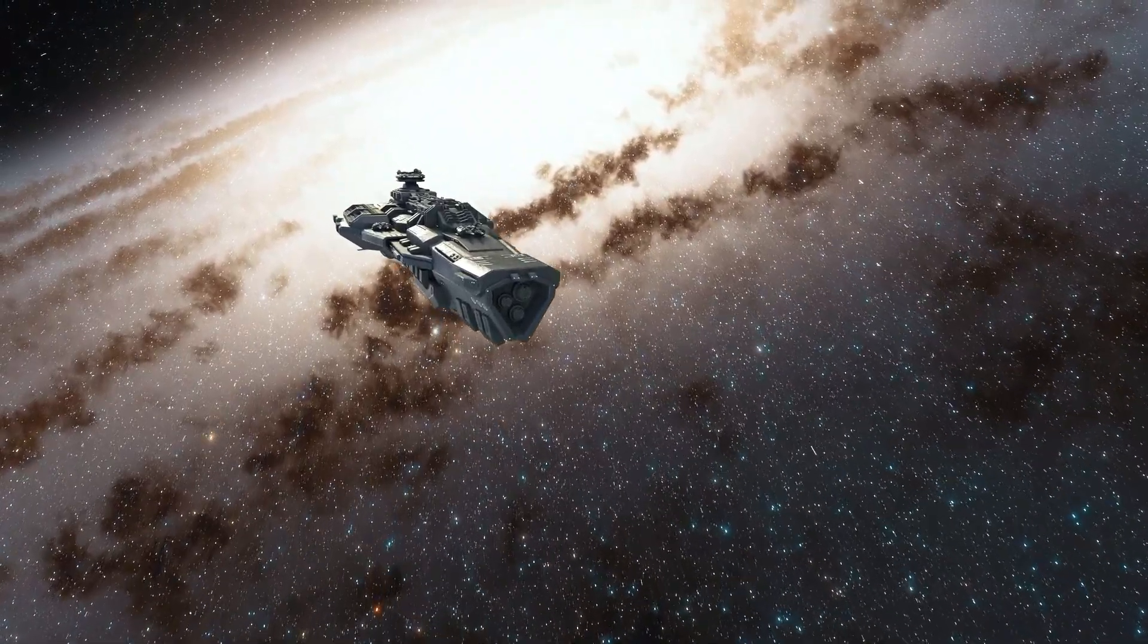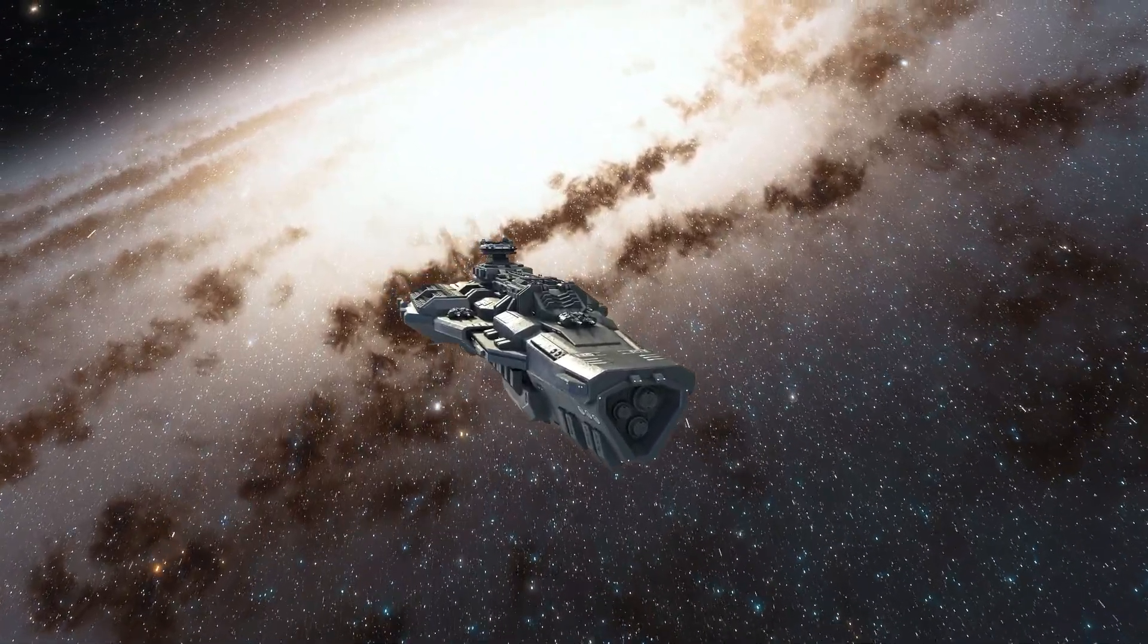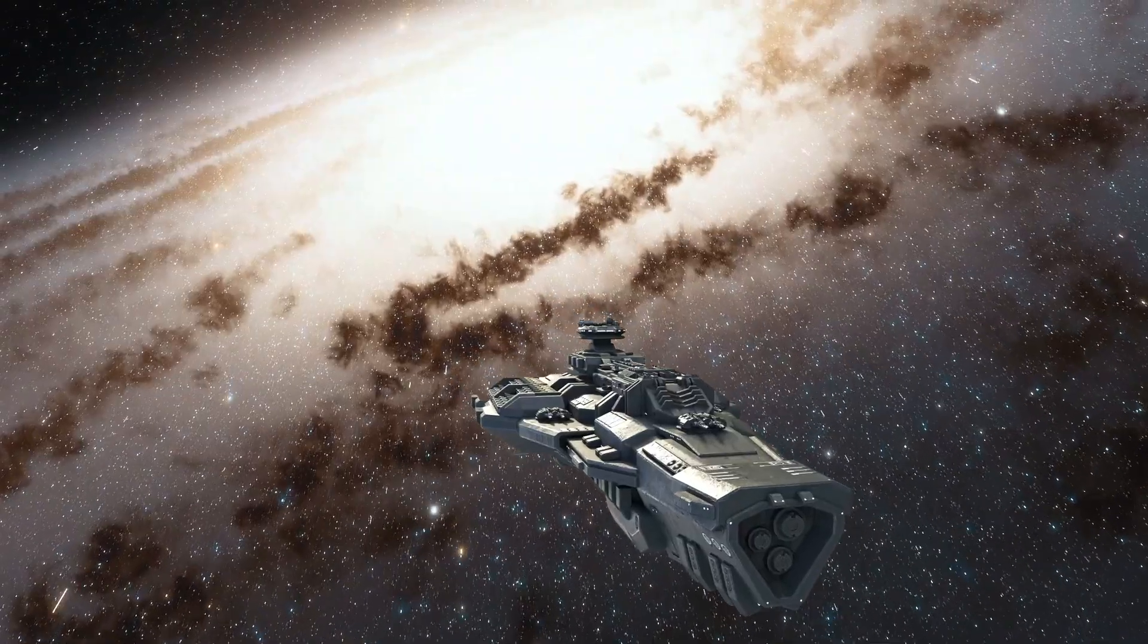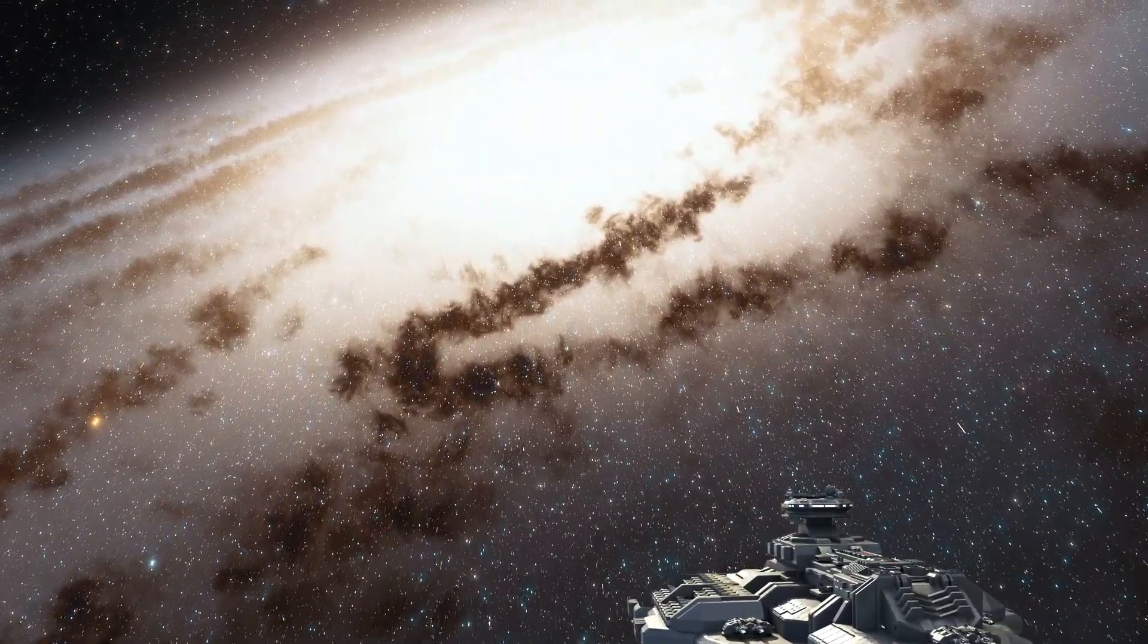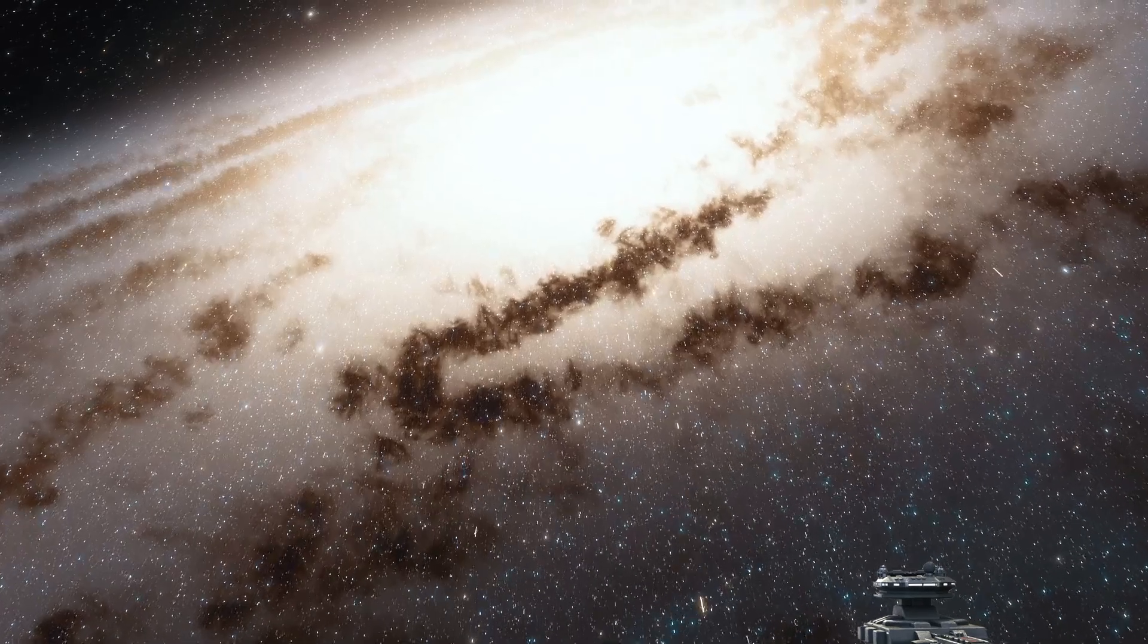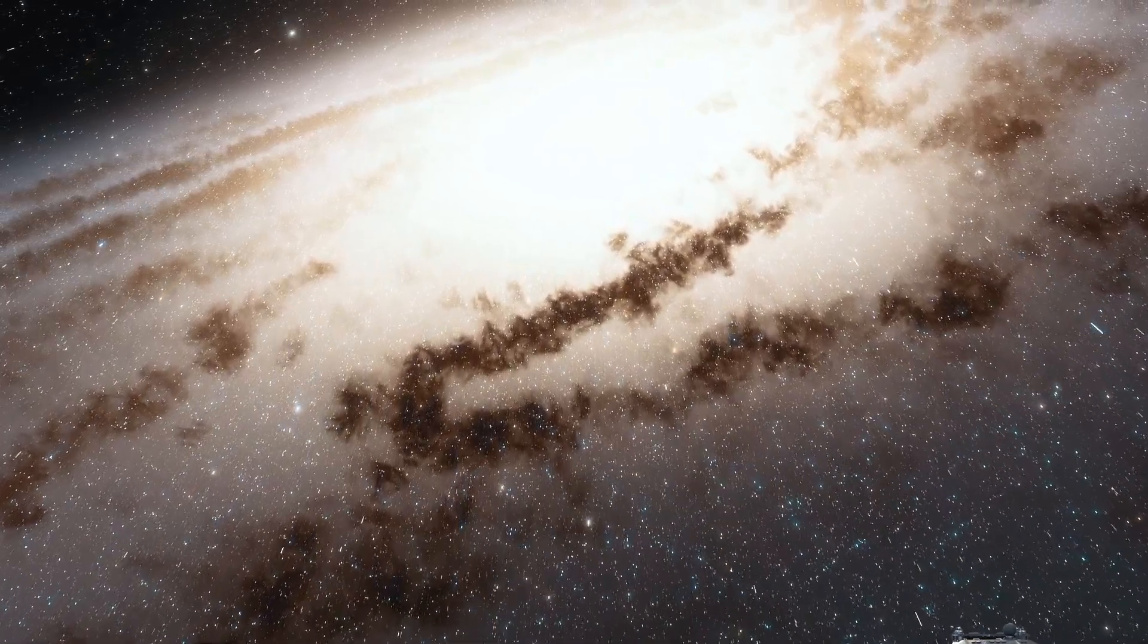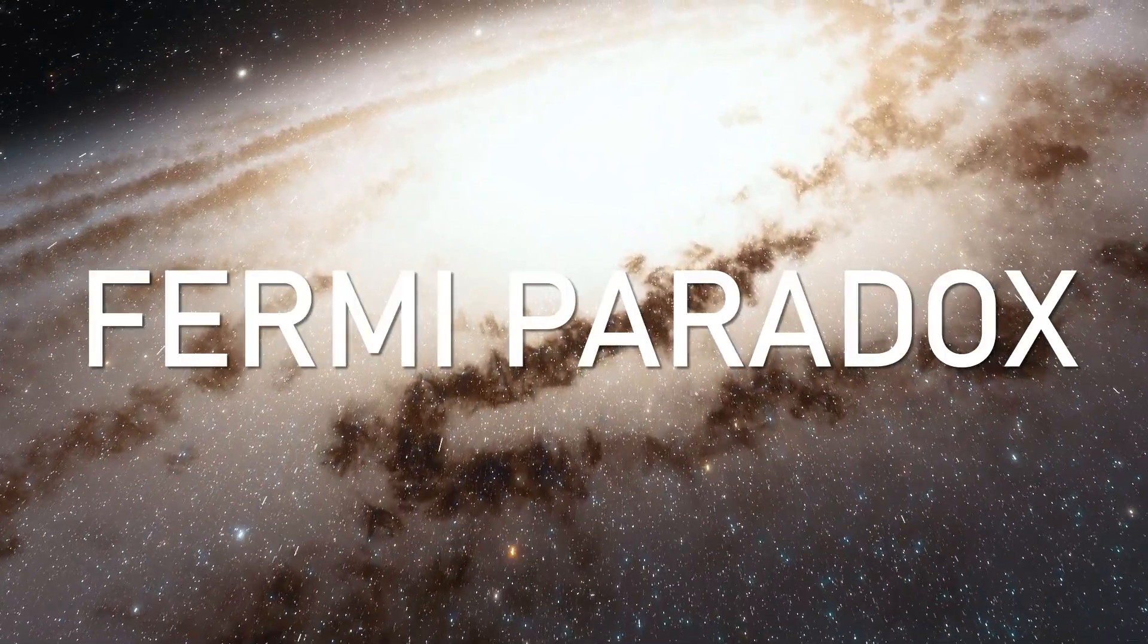It turns out that it will take them on the order of 10 million years to have visited every star system in the galaxy. There should be aliens everywhere. We should see evidence all over the sky and we don't. So how do you reconcile this apparent paradox, the Fermi Paradox?